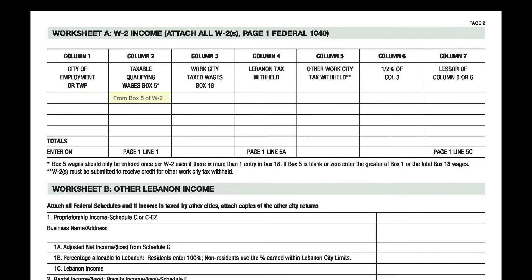In column two, you will enter your taxable wages. This is most commonly box 5 of the W-2. If you do not have an entry in box 5, or the box 1 or box 18 wages on the W-2 are higher than box 5, please enter the higher amount instead of box 5.